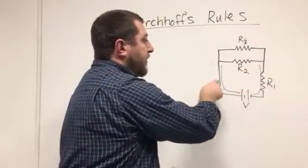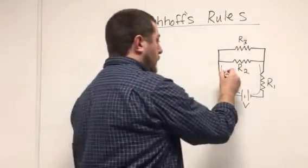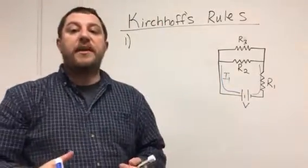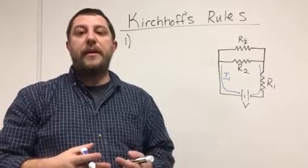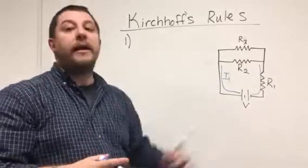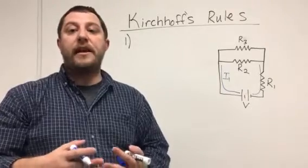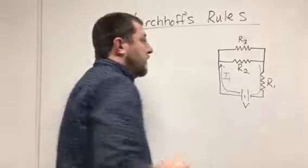Let's call that current I1, and we also want to specify the direction of the current. In most cases it's going to make sense, especially when there's only one battery, that we define the current as coming out of the positive terminal. So we're going to define I1 to be that direction.